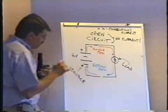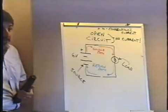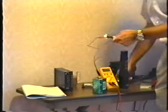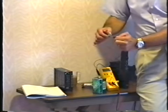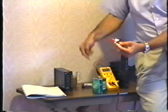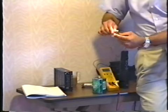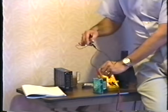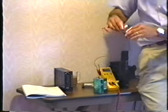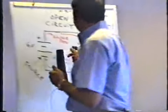If I break the return path, it's the exact same thing — the light bulb still won't light up. It doesn't matter where I break the current flow. If I break the source path — no current flow. If I break the return path anywhere — no matter where — the light bulb goes off. In an open circuit, there is no current flow whatsoever.